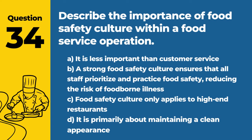Question 59. Discuss the role of blockchain technology in enhancing food traceability and safety. Answer: B. It offers a secure and transparent way to track food products through the supply chain, improving response to food safety incidents. Blockchain can significantly enhance the traceability of food products, contributing to safer food systems.